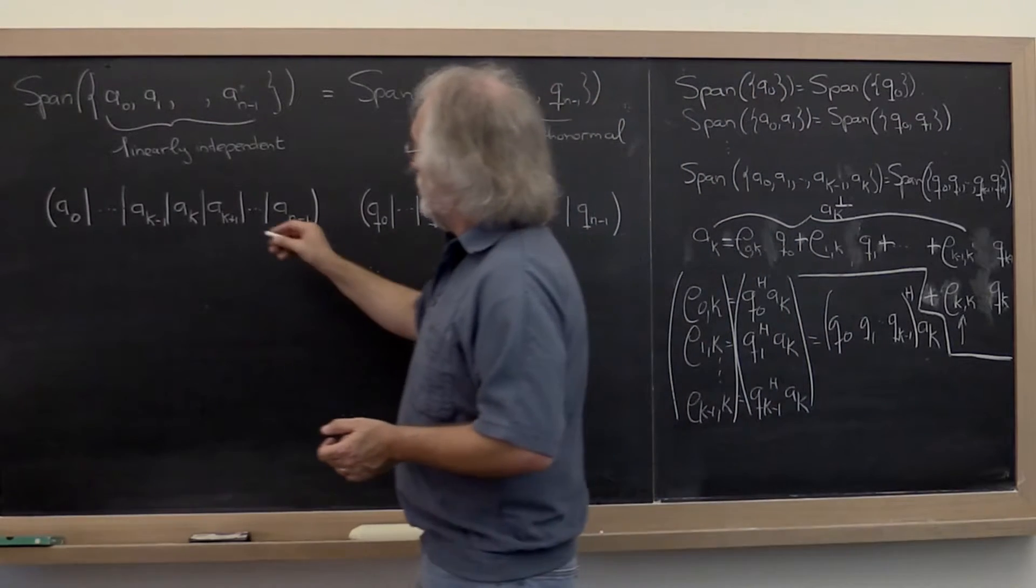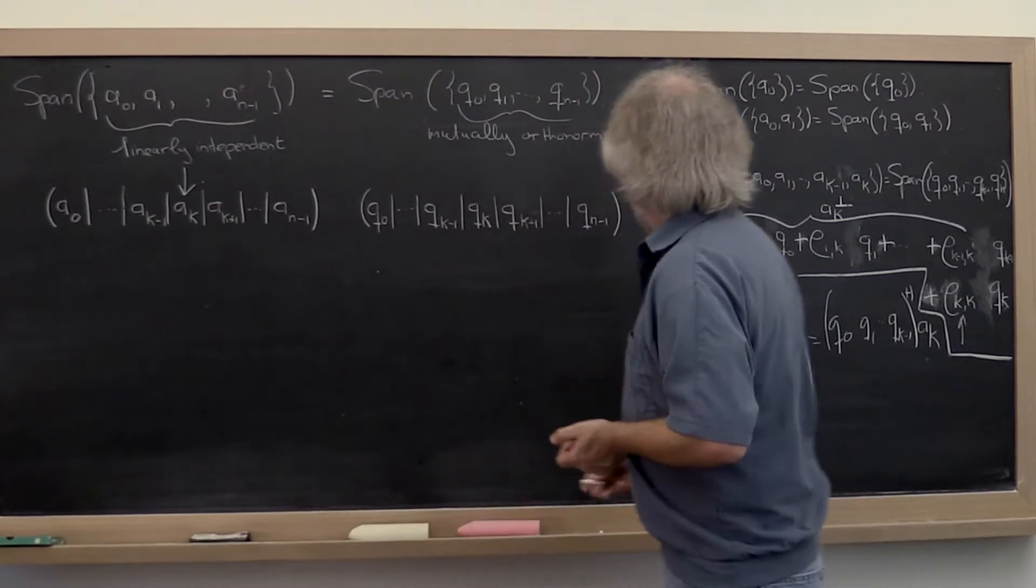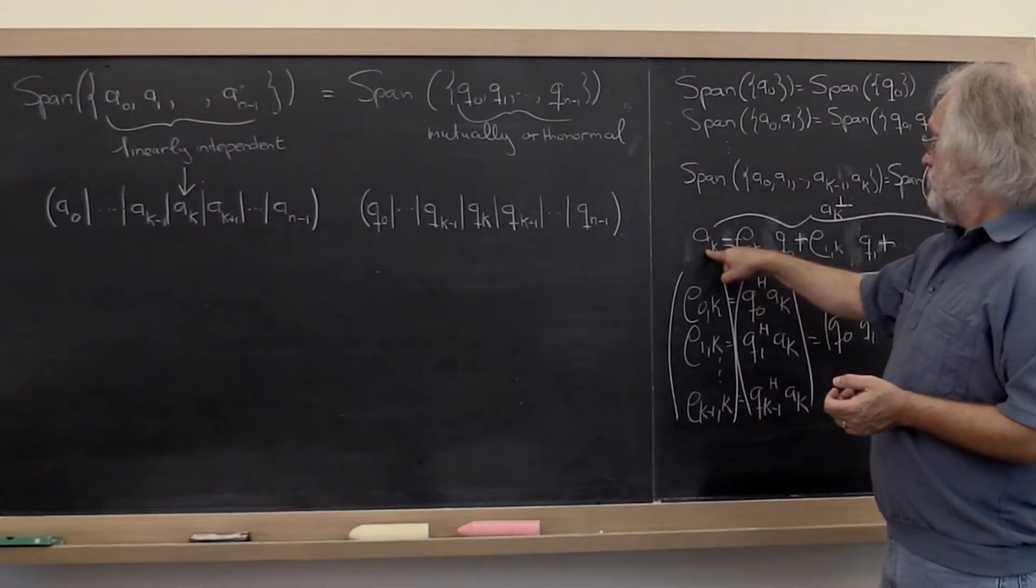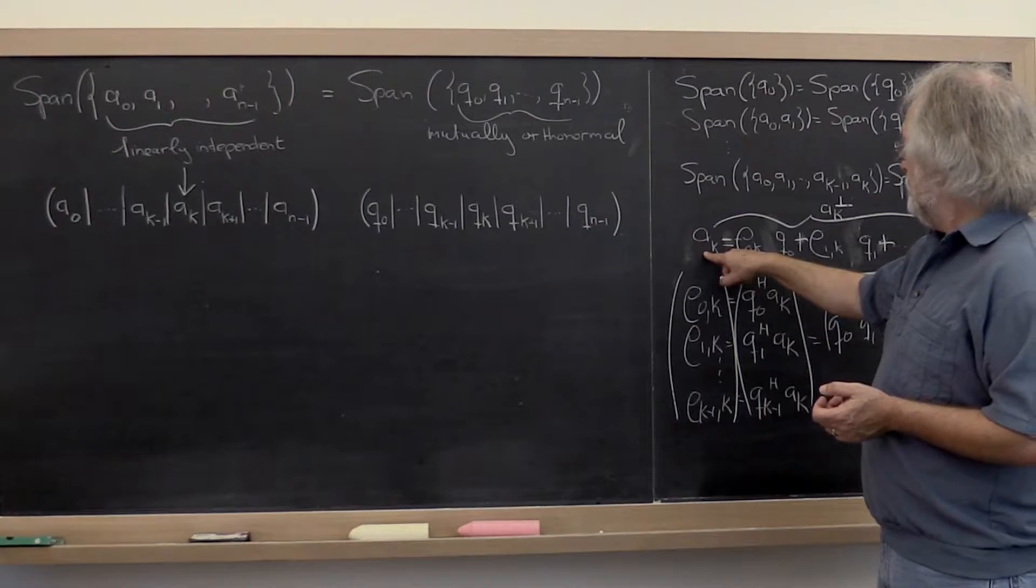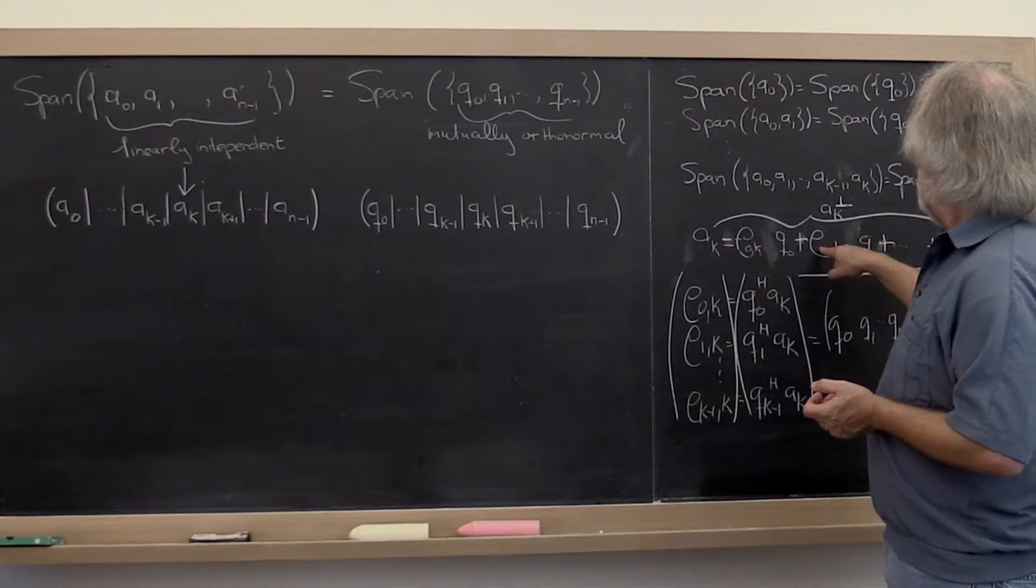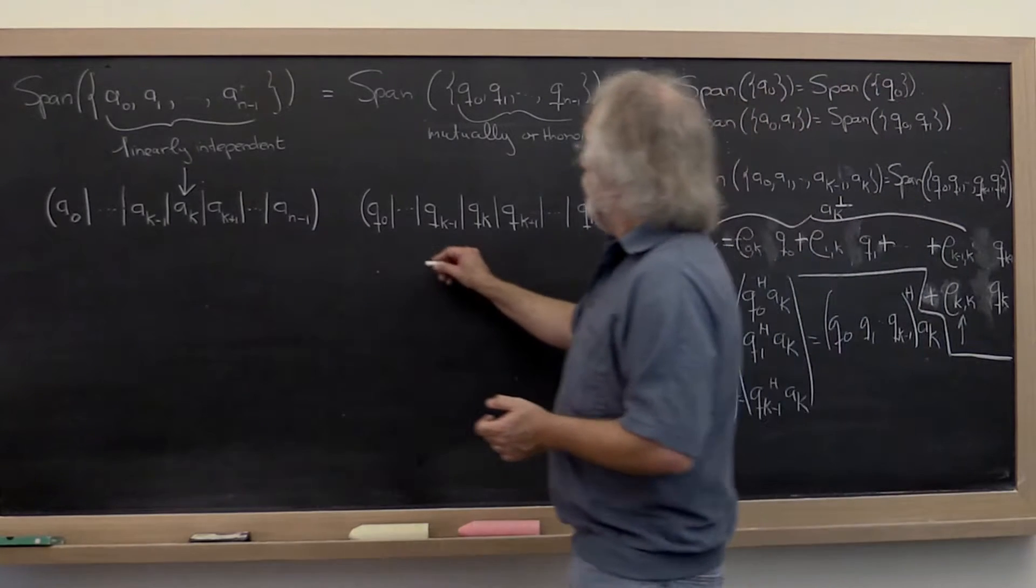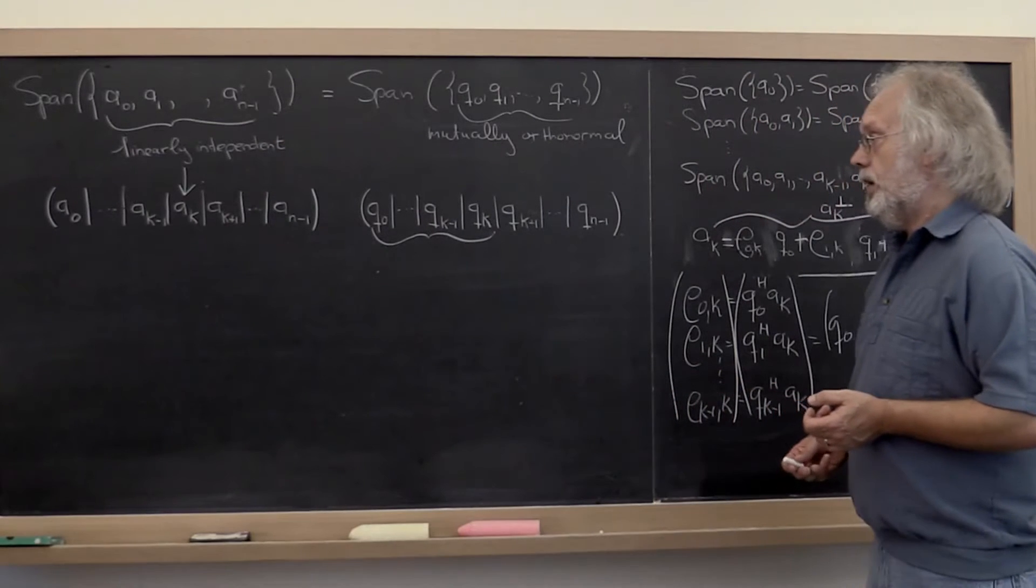If we now focus on the kth column right here, a_k, then we have this right here. Now notice that a_k is actually computed or is equal to the linear combination of all of the columns up to and including q_k.